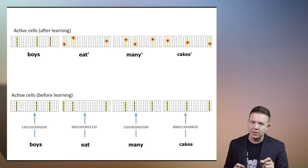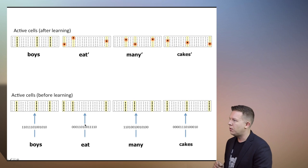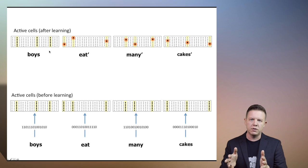The temporal memory after learning is going to identify specific cells within each column to represent that spatial information within the context of the temporal sequence.